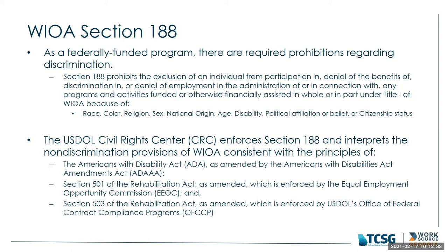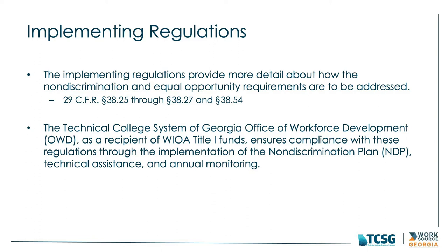Of course, not only is it the law, it's just the right thing to do. Moving on from the language in the law, the next place we look for EO and non-discrimination requirements is the Code of Federal Regulations. These are the more detailed rules for actually implementing these steps. The citations are listed on this slide, and the direct link is included on the references slide at the end of the PowerPoint.